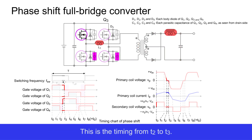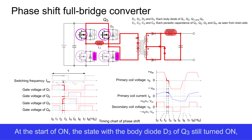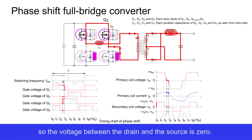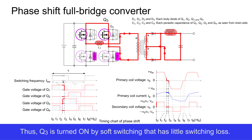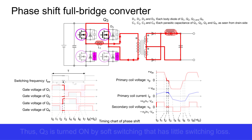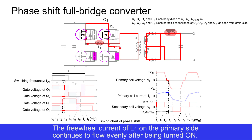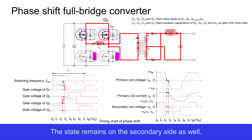This is the timing from T2 to T3. Q3 is turned on. At the start of on, the body diode D3 of Q3 is still turned on, so the voltage between the drain and source is zero. Thus Q3 is turned on by soft switching with little switching loss. The freewheel current of L1 on the primary side continues to flow after being turned on, and the state remains on the secondary side as well.